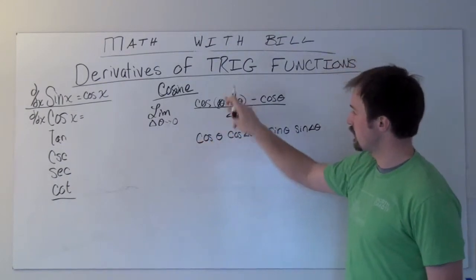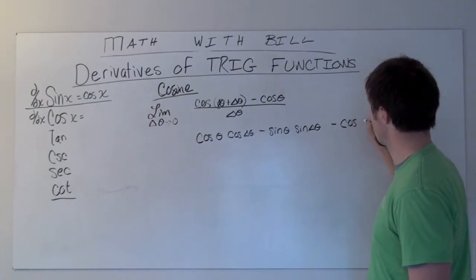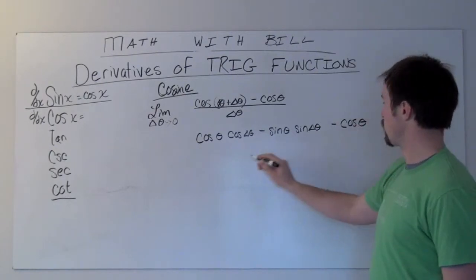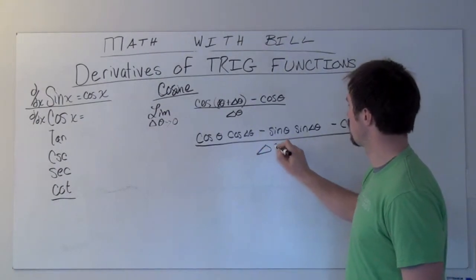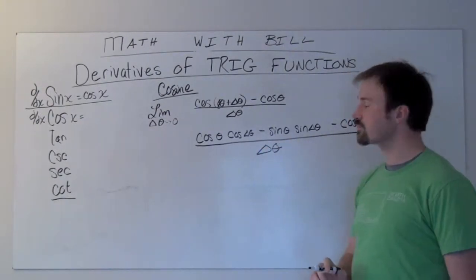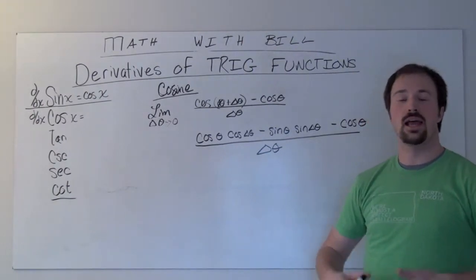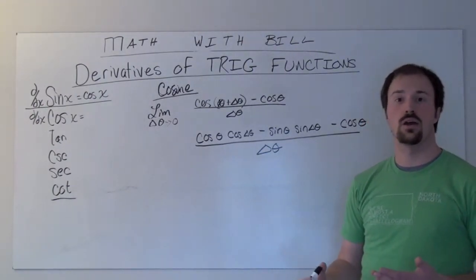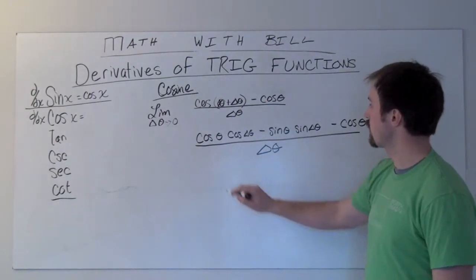So this piece is expanded, and then I just copy out the rest, minus cosine theta, and again all of this is divided by the change in theta. At this point, we want to look at our three terms in the numerator and decide which two have a common term. The common term here exists with our cosines.